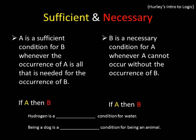Looking at the screen, the antecedent in a conditional is always the sufficient condition. The consequent, shown in red, is always the necessary condition. So if we say 'if A then B,' A is the sufficient condition and B is the necessary condition.